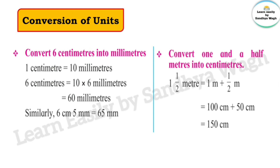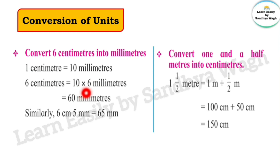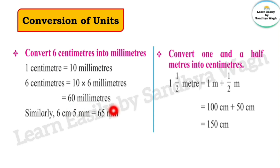Next, convert 6 centimeters into millimeters. 1 centimeter is equal to 10 millimeters. Then 6 centimeters is equal to 10 multiplied by 6 millimeters, so the answer is 60 millimeters. Similarly, for 6 centimeters and 5 millimeters.